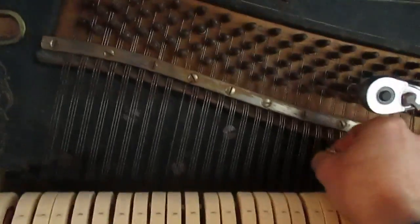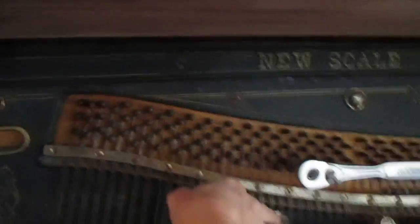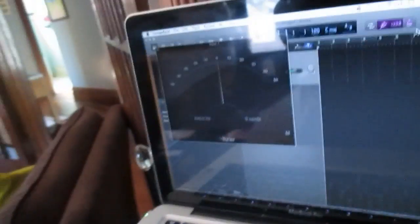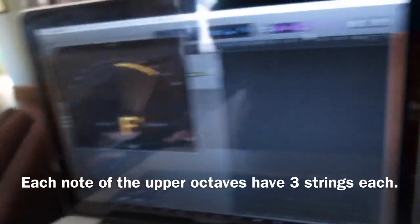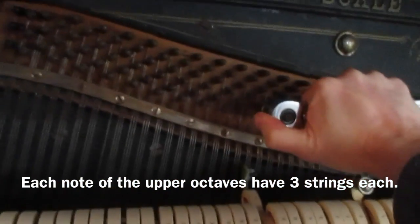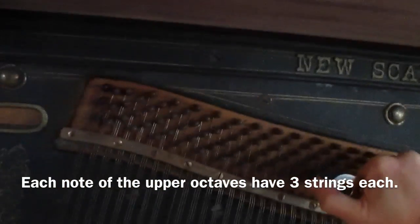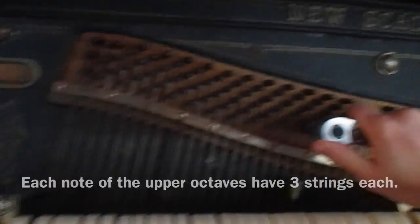I'm going to move to the bottom nut and hit the string. Hit the note again, Eleanor. Again, it's flat. F sharp is flatter than a G. So, I'm going to turn it clockwise. Hit it again.